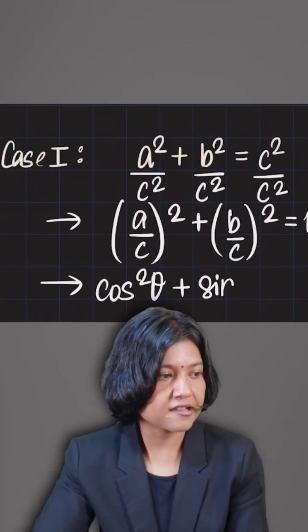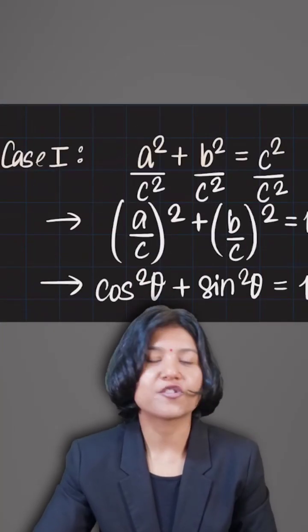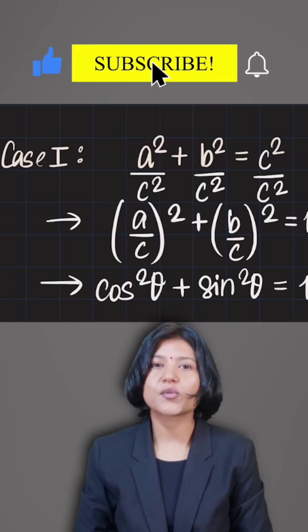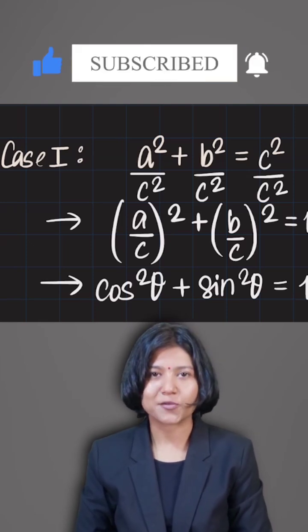We just got the first square identity for trigonometry: cos squared theta plus sine squared theta equals one.